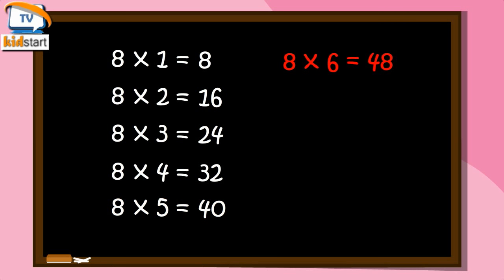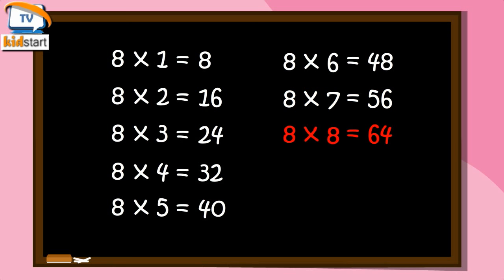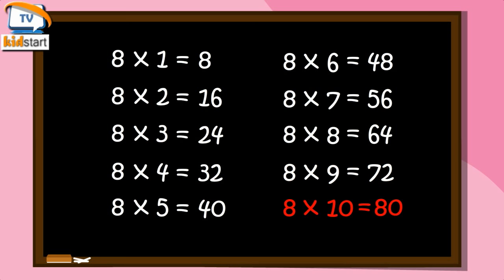8 sixes are forty-eight. 8 sevens are fifty-six. 8 eights are sixty-four. 8 nines are seventy-two. 8 tens are eighty.